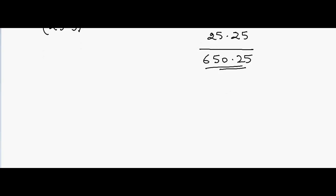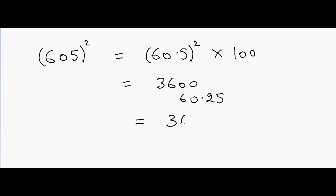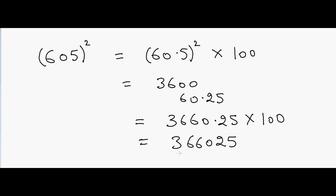This method can also be used for larger digits. For example, if I have 6050 and I want to do the square of this number, I can write this as 60.5 squared multiplied by 100. We know how to do 60.5 squared — that should be equal to 60 squared, which is 3600, plus 60.25. So that gives me 3660.25 multiplied by 100, which equals 366025. So that will be the answer.